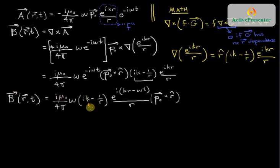remember that k can be written as omega over c naught. So that omega and this omega will give us an omega squared.